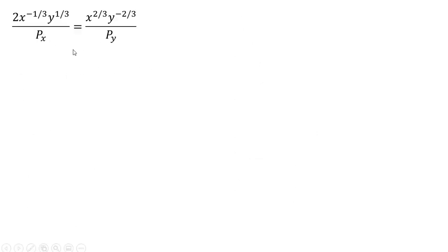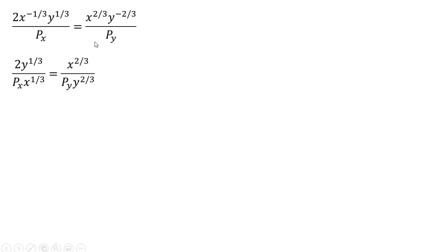Rewriting that last step and simplifying using the rules of exponents: x to the minus one-third moves into the denominator as x to the one-third, and y to the minus two-thirds moves into the denominator as y to the two-thirds. We can then cross-multiply: x to the one-third times x to the two-thirds leaves us with x, and y to the two-thirds times y to the one-third leaves us with y, giving us this result.